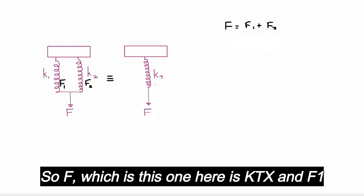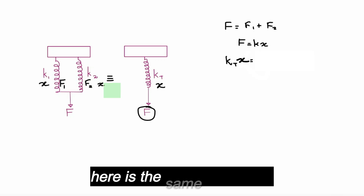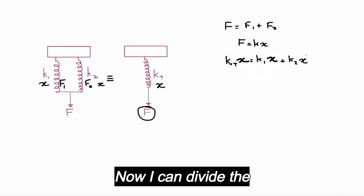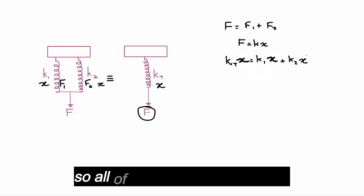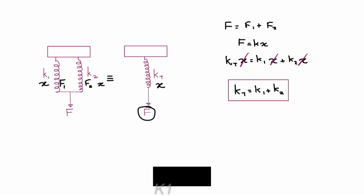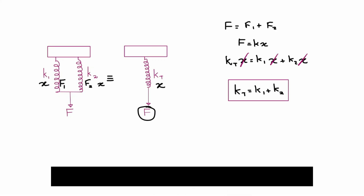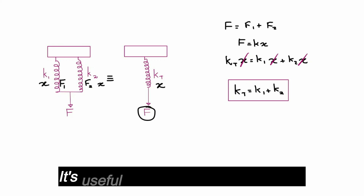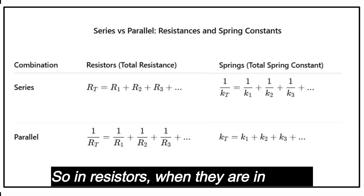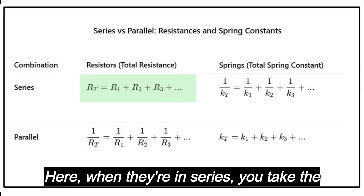Using F equals kx: F equals kt·x, and since both springs share the same extension, F1 equals k1·x and F2 equals k2·x. Dividing through by x, all the x's cancel and we get k-total equals k1 plus k2. Note this is the exact opposite of resistors: for resistors in series you add them, but for springs in series you take reciprocals, and vice versa.